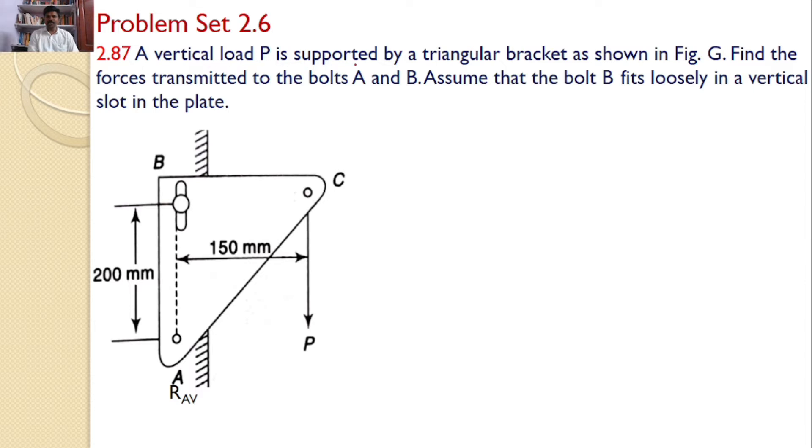A vertical load P is supported by a triangular bracket as shown in figure G. Find the forces transmitted to the bolts A and B. Assume that bolt B fits loosely in a vertical slot in the plate.